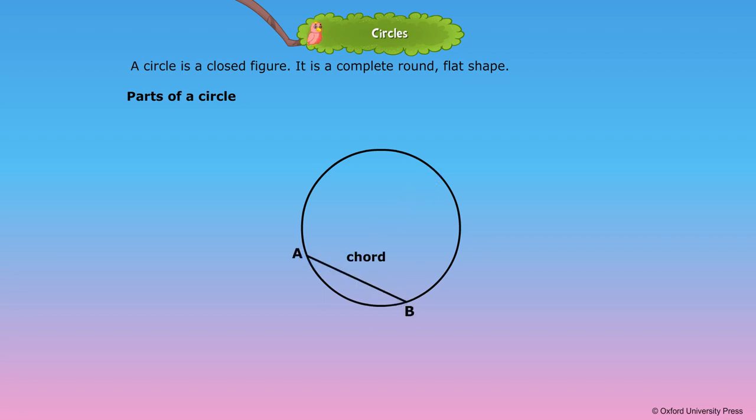A chord is a line with both end points on the circumference. A diameter is a chord that passes through the center of the circle.